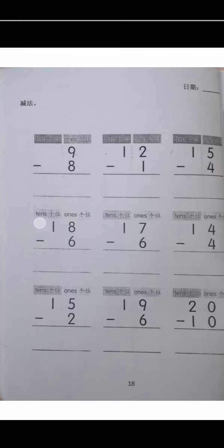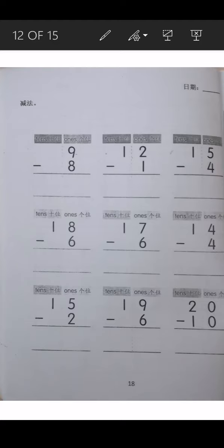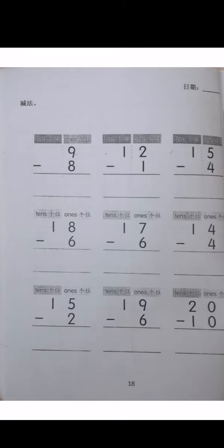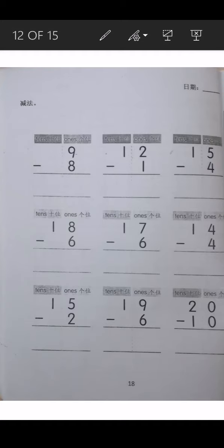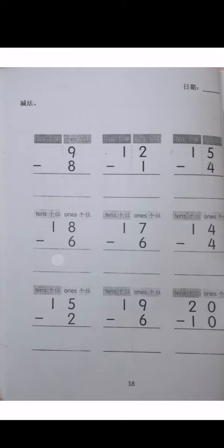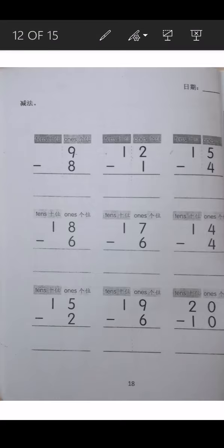Let's look at this one: 18 minus 6. 8 minus 6 equals 2, then write down the 1, so the answer is 12. Children, 18 minus 6 equals 12, please write 12 here. Children, the rest I want you to try to count and write the answer.